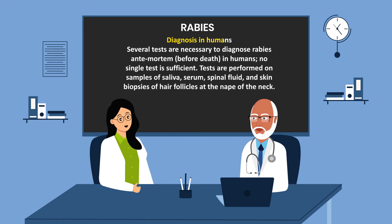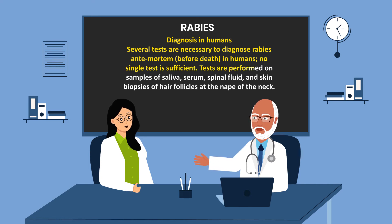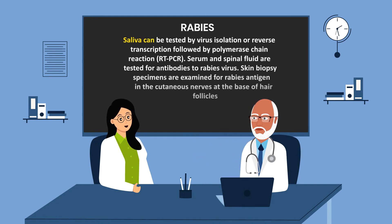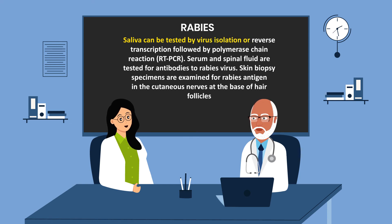Diagnosis in humans: Several tests are necessary to diagnose rabies ante-mortem — that is, before death — and no single test is sufficient. Tests are performed on samples of saliva, serum, spinal fluid, and skin biopsies of hair follicles at the nape of the neck. Saliva can be tested by virus isolation or reverse transcription followed by polymerase chain reaction. Serum and spinal fluid are tested for antibodies to rabies virus. Skin biopsy specimens are examined for rabies antigen in the cutaneous nerves at the base of the hair follicles.